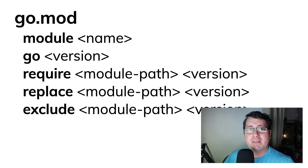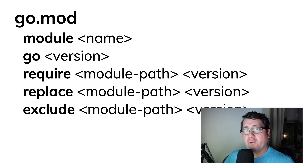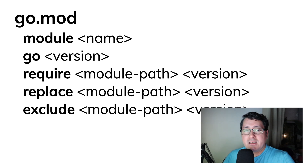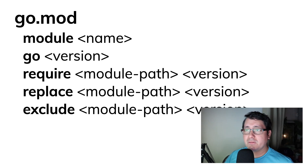Replace is a way to take a requirement and replace it with something running locally or perhaps a forked version of the same package. Exclude is used to exclude packages — for example, maybe you don't want to use a specific version, or that version has a security issue or a bug.